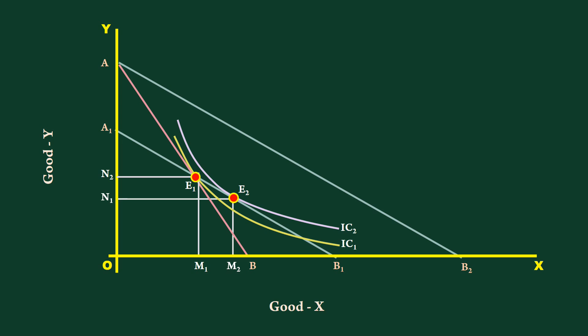The consumer slides down along the price line by substituting M1, M2 units of good X in the place of N1, N2 units of good Y. This is substitution effect.